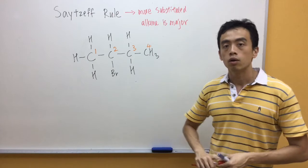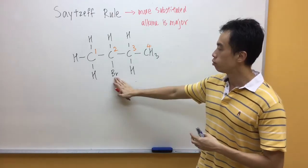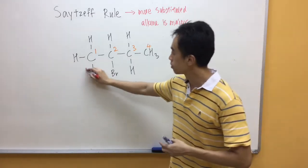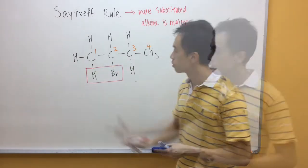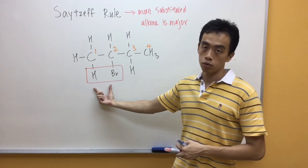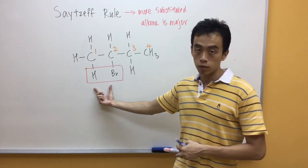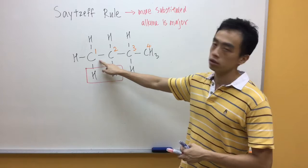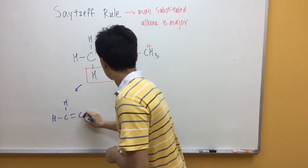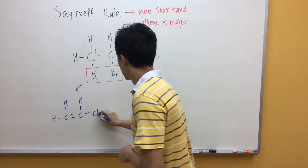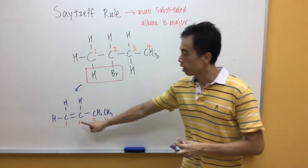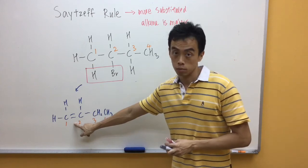So, what we can do is, when we remove the Br, we can remove the Br together with the hydrogen on carbon one. Now, if this HBr is eliminated, then the product formed will be an alkene where the double bond is between carbons one and two.